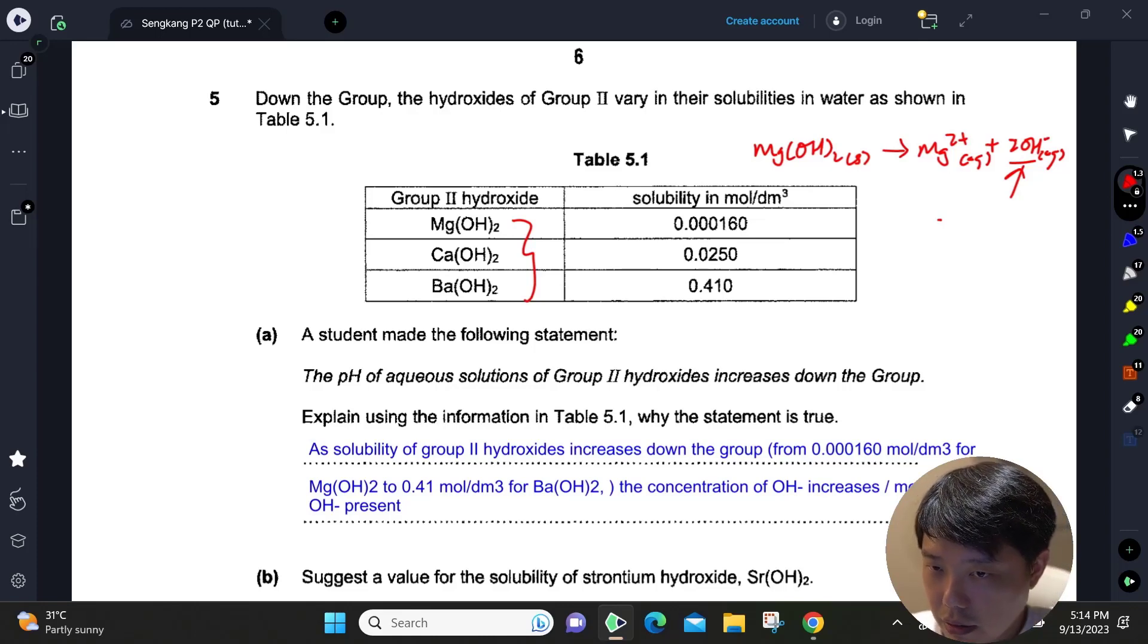The more OH⁻ there is, the higher the pH will be, which literally means the more soluble the hydroxide is, the higher the pH will be. If you look at the table, solubility increases down the group.